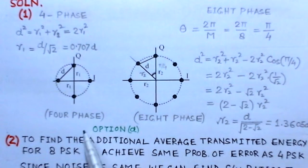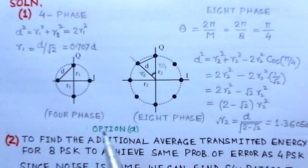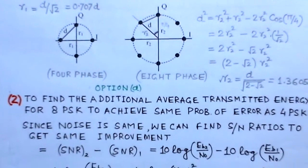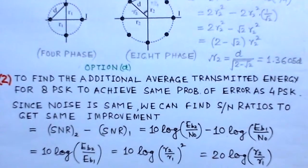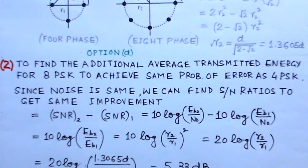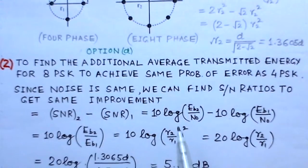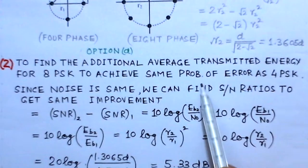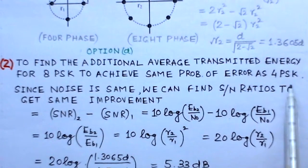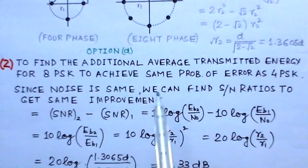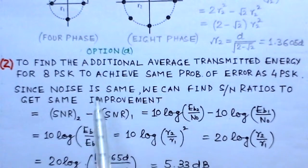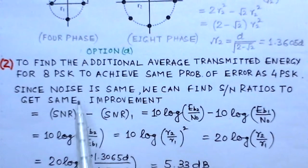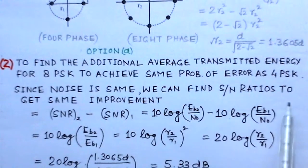Now for the second part we have to find the additional average transmitted energy for 8-PSK to achieve same probability of error as 4-PSK. Instead of finding the power, we find the signal to noise ratio. Since noise is same in both cases, we can find signal to noise ratio to get the same improvement. If the signal to noise ratio improvement is the same, that means that is the increase in power.